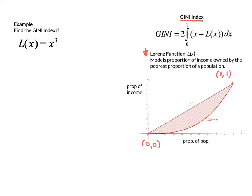So, the area between the two, by definition, would be upper minus lower, which is y equals x minus L of x. It turns out that L of x is always below y equals x. It has to be, if you think about it...